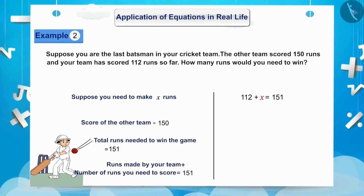In order to find the value of x, we have to solve this equation. Here, we will transpose 112 from the LHS to the RHS and it will become minus 112. Therefore, we will get x is equal to 151 minus 112. 151 minus 112 is equal to 39. Thus, we will get x is equal to 39.